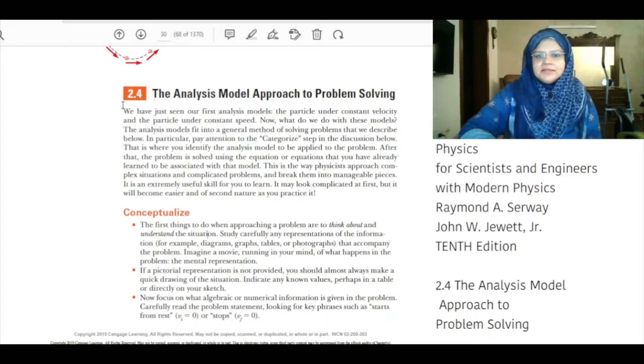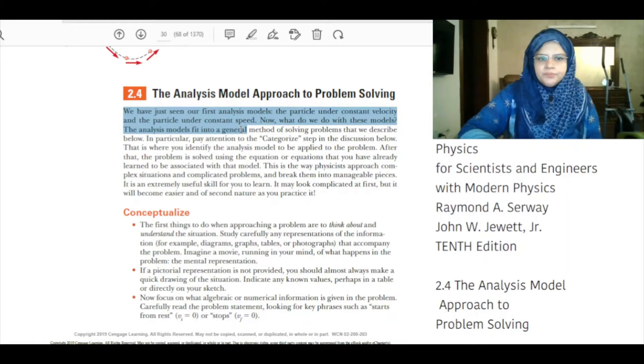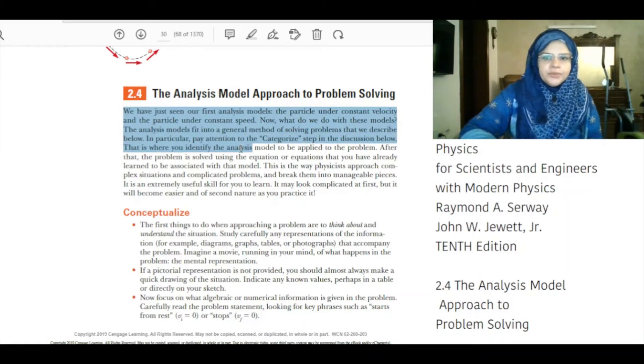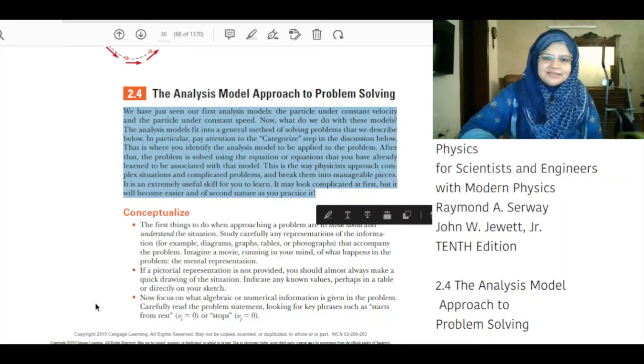We have just seen our first analysis models, the particle under constant velocity and the particle under constant speed. Now what do we do with these models? The analysis model fits into the general method of solving problems that we describe below. In particular, pay attention to the categorize step in the discussion below. That is where you identify the analysis model to be applied to the problem. After that, the problem is solved using equations that you have already learned to be associated with that model. This is the way physicists approach complex situations and complicated problems and break them into manageable pieces. It is an extremely useful skill for you to learn. It may look complicated at first but it will become easier and of second nature as you practice it.